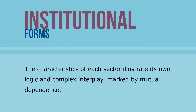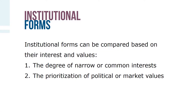The distinctive characteristics of each sector illustrate that each of the sectors has its own logic and that there's a complex interplay between them. Four institutional forms can be compared based on their interest in values: first, the scope or degree of narrow or common interests, and second, the prioritization of political or market values.